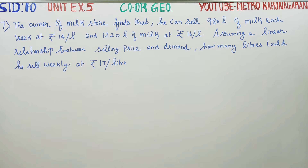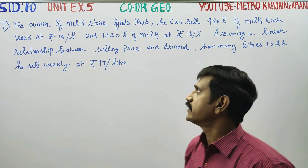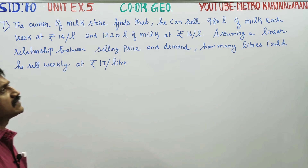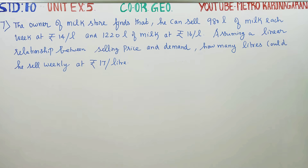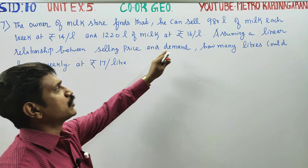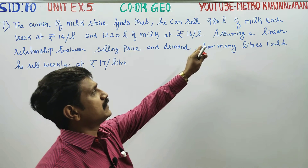Dear 10th standard students, in unit exercise number 5, coordinate geometry: the owner of a milk store can sell 980 litres of milk each week at 14 rupees per litre, and 1220 litres of milk at 16 rupees per litre.